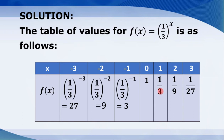f(2) = (1/3)^2 = 1/9. f(3) = 1/27. These are the table of values for the function f(x) = (1/3)^x.